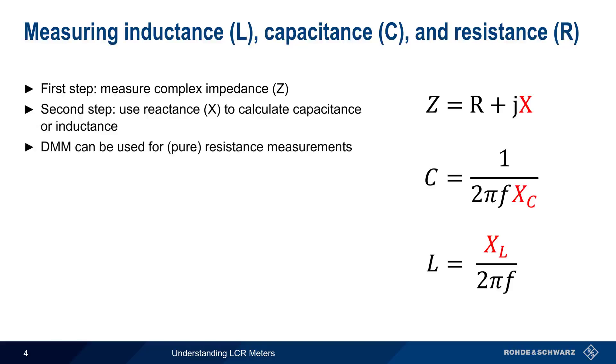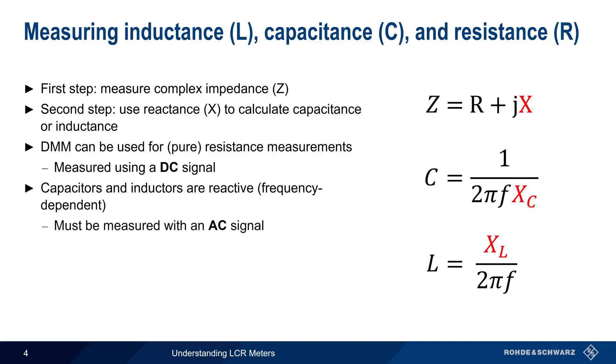A pure resistance, that is one with no complex or reactive part, can be measured with a basic digital multimeter using a DC signal. The impedance of a capacitor or inductor, on the other hand, is frequency dependent, and therefore must be measured using an AC signal, often at different frequencies, and sometimes at different levels or voltages as well.